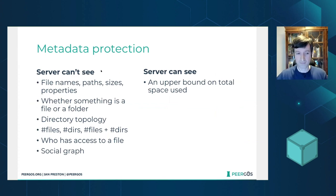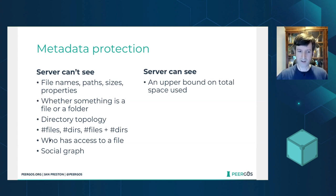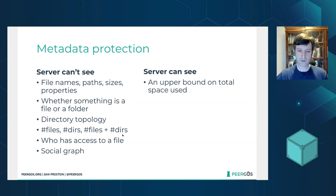We also care a lot about metadata. There's a long list of things the server can't see: file names, paths, sizes, properties like MIME type and modification time, and even whether something is a file or a folder. Because of that, the server also can't see the directory topology — it can't see the number of files or directories. The social side is also protected: who has access to a file, and even how many people have access, can't be seen by the server. The social graph is also hidden — the mailbox is blinded so the server can't see who's sending a follow request to whom. The main thing the server can see is an upper bound on total space used, and if you care about that, you can just fill it with empty data.